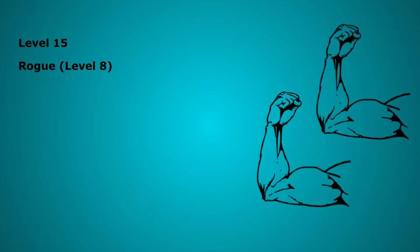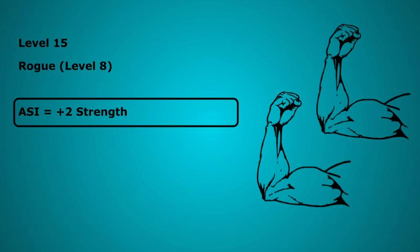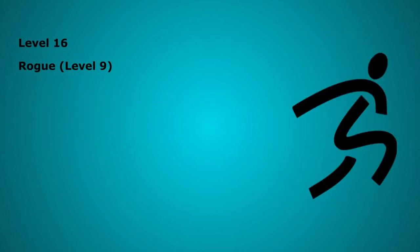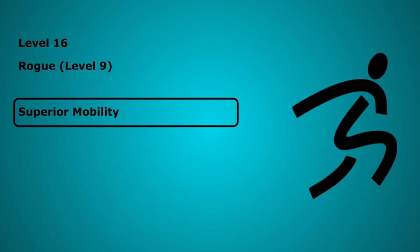Level 15 we take our 8th level in Rogue where we get another ability score increase. We take 2 more strength to max it to 20. Level 16 we take our 9th level in Rogue where we get superior mobility subclass feature. This is a 10 foot increase to movement speed bringing our total base speed to 50. 9th level Rogues also increase their sneak attack damage to 5d6.